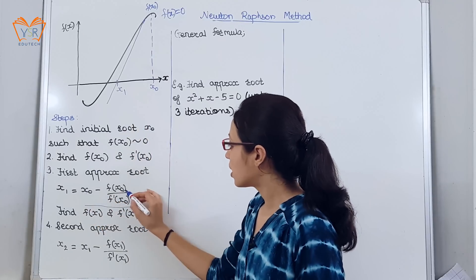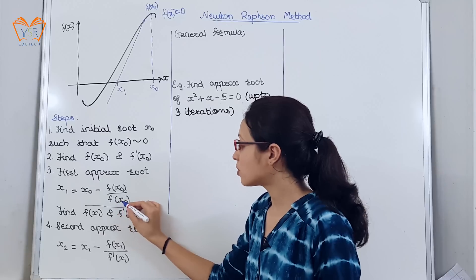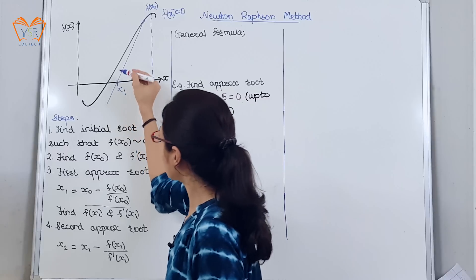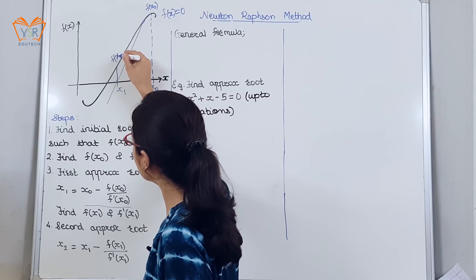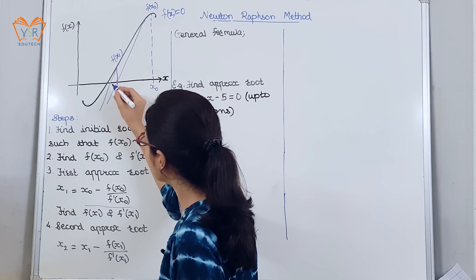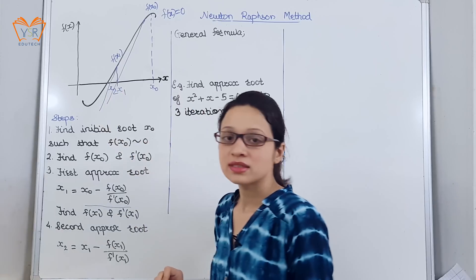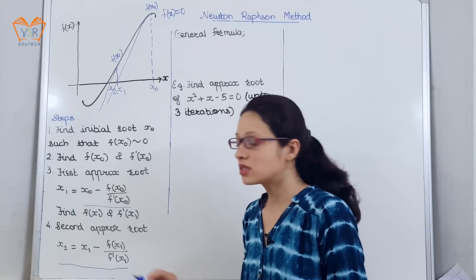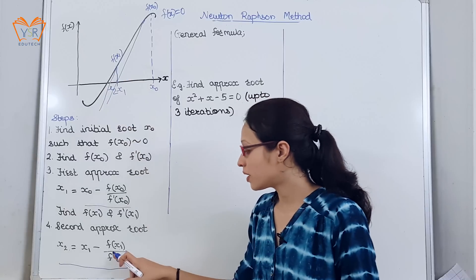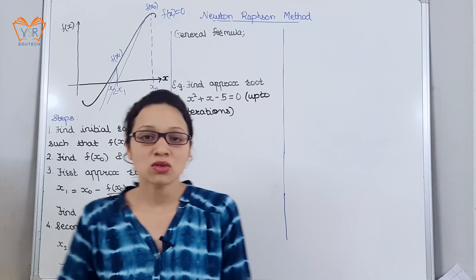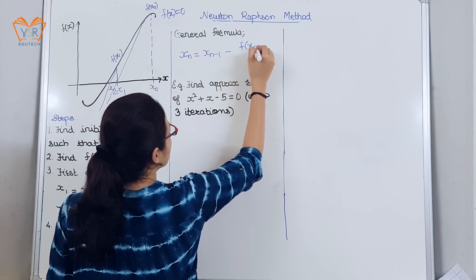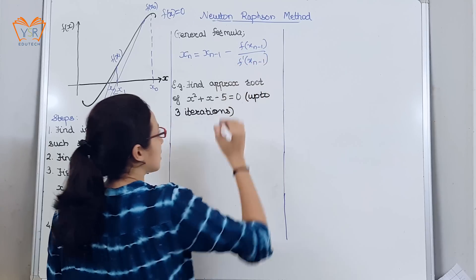To find the first approximate root, this is the formula. We have x₀ from here, f(x₀) we have the value here, and f'(x₀) — find the derivative of this equation. Now find f(x₁) and f'(x₁). To find f(x₁), simply draw a line that touches the curve; for f'(x₁), again draw the tangent that crosses the x-axis. This gives x₂, the second approximate root. The generalized formula is: xₙ = xₙ₋₁ − f(xₙ₋₁) / f'(xₙ₋₁).